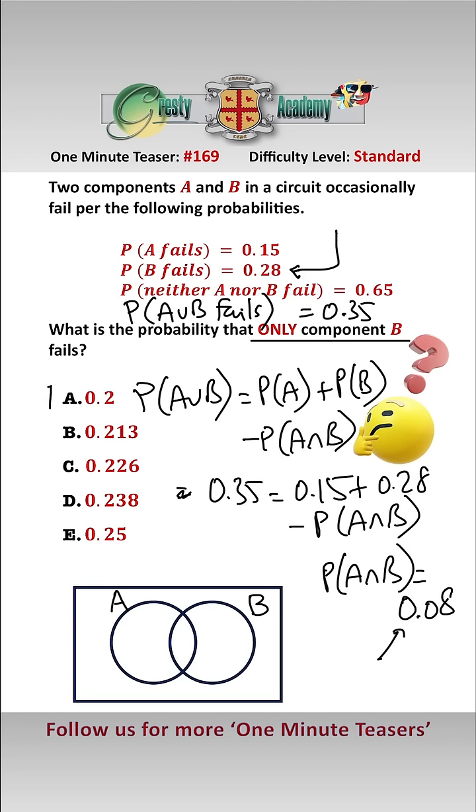Which is answer A, 0.2. We can also do this using a Venn diagram. 0.65 is neither of them fail.